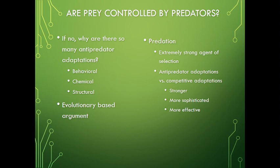Are prey controlled by predators? There is evidence — lots of evidence with invasive species — that yes, predators do control prey. The evidence in non-invasive situations is harder to find. But if the answer were no, there's a really intriguing question: why are there so many anti-predator adaptations? Organisms have all sorts of behavioral, chemical, and structural anti-predator adaptations that work really well. This is an evolutionary argument: if predator populations never really controlled prey, we wouldn't expect these anti-predator adaptations to evolve.